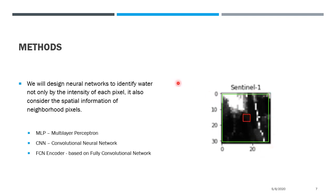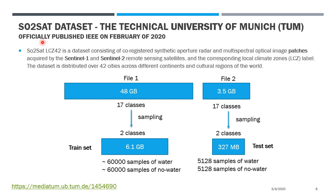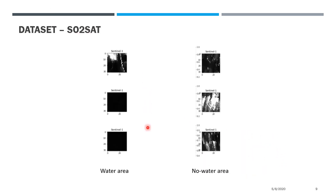So we propose a neural network method to identify water, which also considers the neighborhood pixel information. To train a neural network we need a lot of data, so in this case we are going to use the So2SAR dataset from the Technical University of Munich. This dataset consists of many patches of Sentinel-1 SAR images. The dataset has two parts — one big and one small — each with 17 classes, but we only need two classes. We sample the big one as our training set and the small one as our test set.